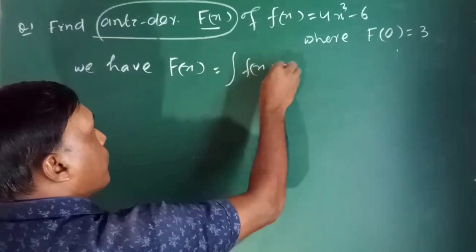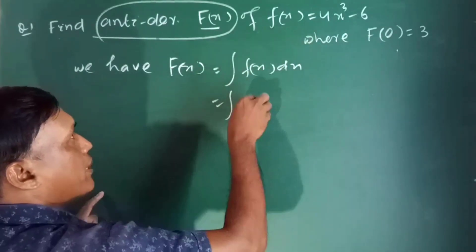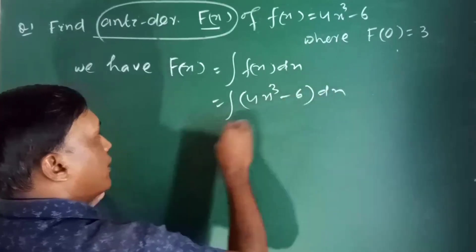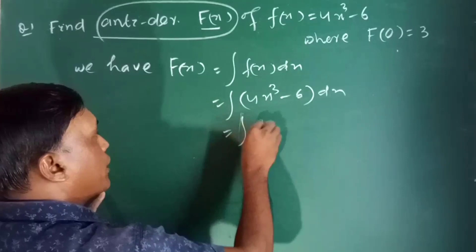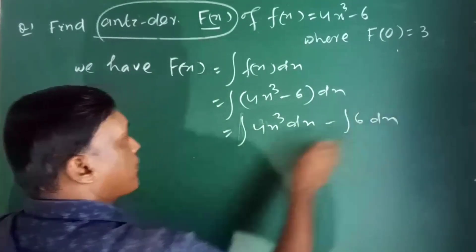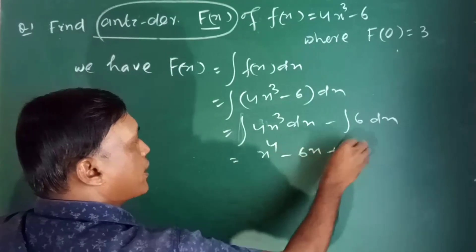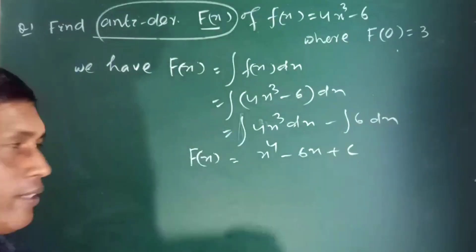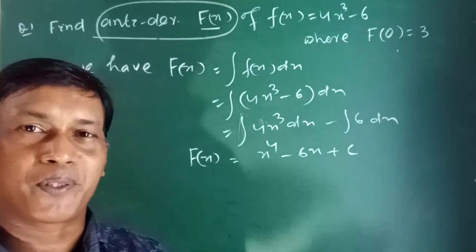So F of x is equal to the integration of f of x, where f of x is 4x cubed minus 6. This is equal to x to the power 4 minus 6x plus c. This is the value of F of x — notice it is an indefinite integral because c is present.